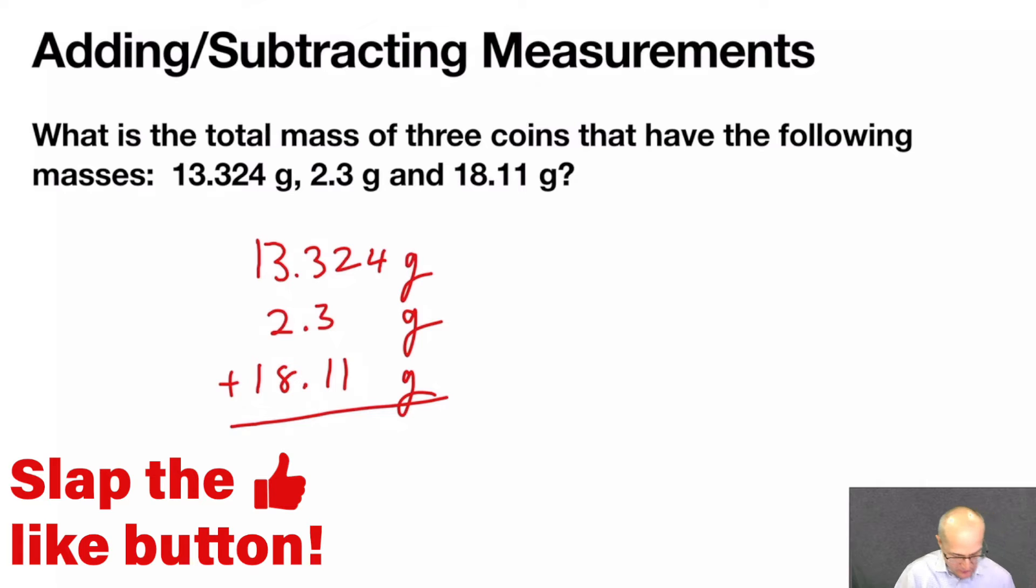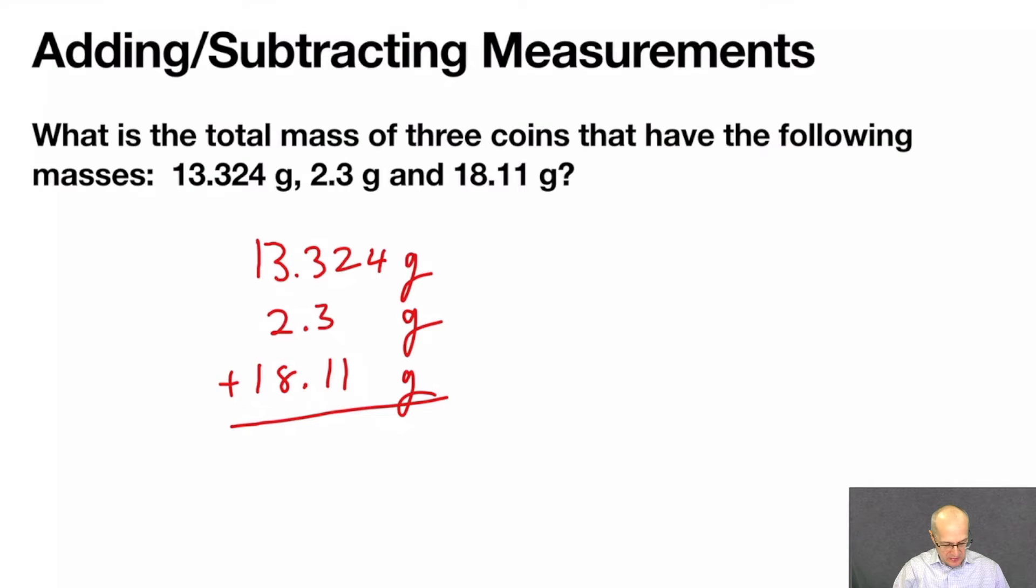Let's add all that together. Write out your handy-dandy calculator. 13.324 plus 2.3 plus 18.11 equals, calculator says, 33.734 grams.